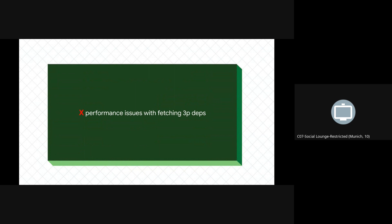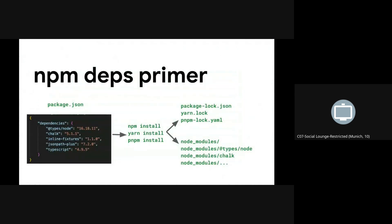The first problem we wanted to fix with Rules.js was performance issues with fetching third-party deps. Users typically define their dependencies in package.json, run a package manager — NPM, Yarn, or pnpm — that creates a lock file, and it lays out a node_modules folder on disk. That folder gets ignored and not checked into the repo, but Node uses it to find those dependencies at runtime.